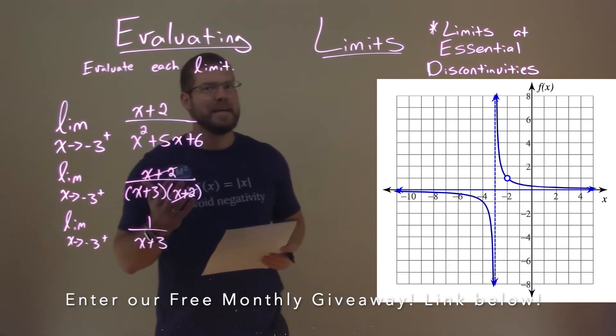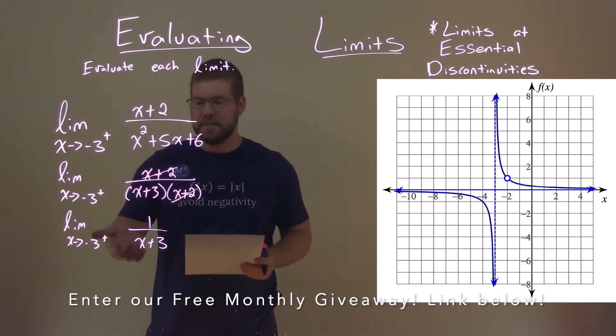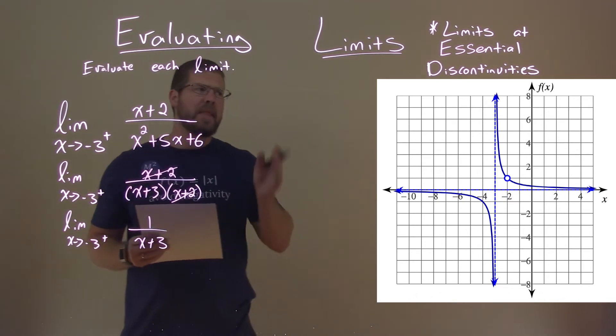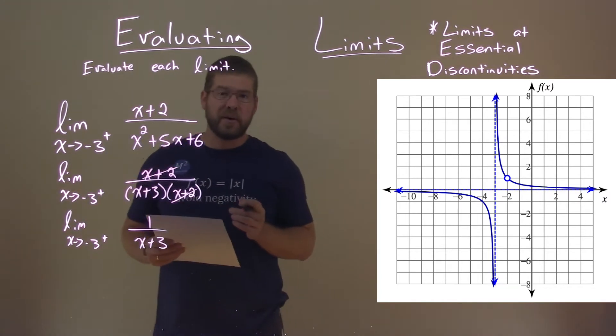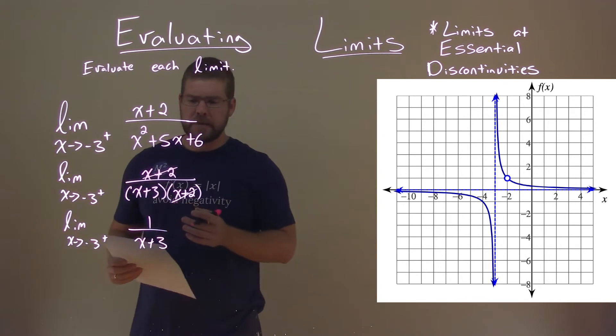Now, we know we can't just plug in negative 3 for x. We'll be dividing by 0 here, clearly. And that's seen with the asymptote on our graph. But how can we interpret what we see in the graph versus finding it algebraically?